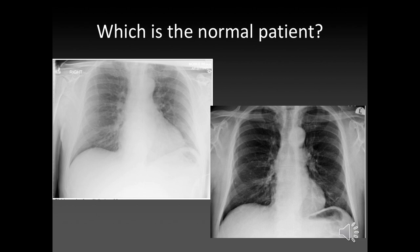So here are two films. Hands up for who thinks the film on the left is normal. They're actually both films of the same patient, and they're both normal — there's no pathology in either of them. It's just that this one is an AP film and this one's a PA film. You can see the difference it makes, and when you don't have anything to compare it against, a lot of people would say the heart's quite big, there's a bit of congestion, maybe the patient has heart failure — but it's actually not. The patient is completely fine.